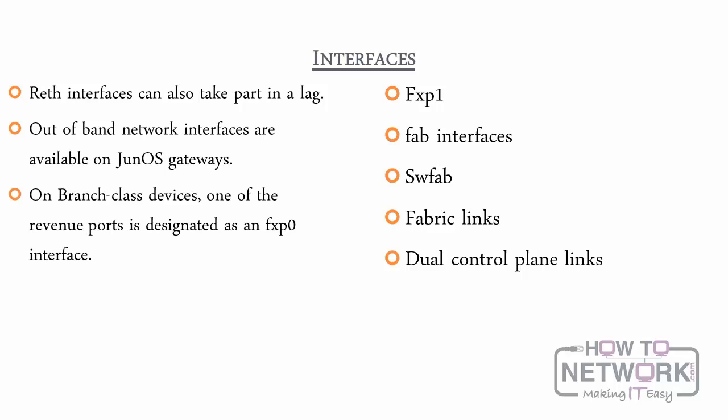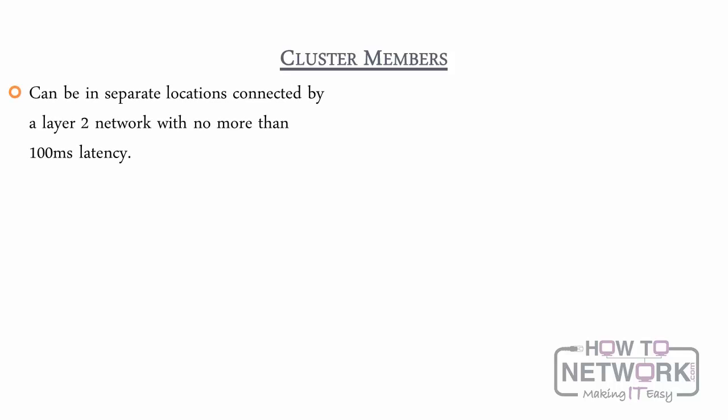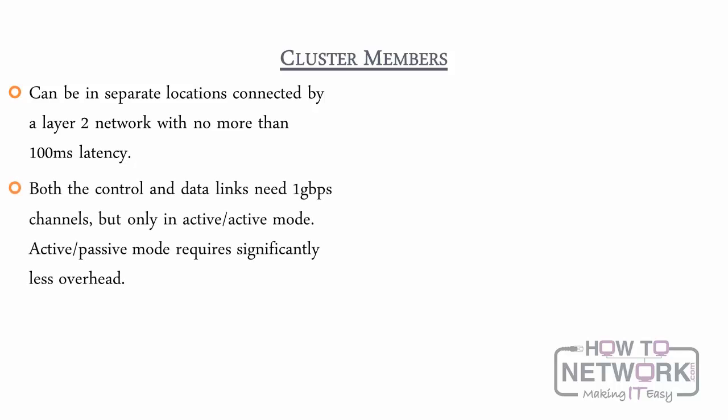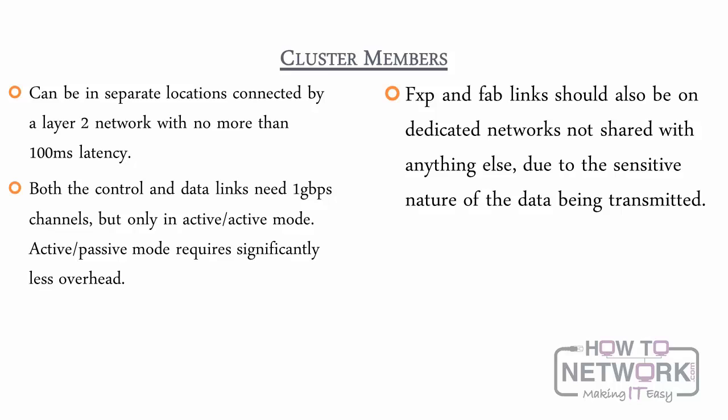Chassis cluster members needed to be connected directly to each other in the past. Now they can be in separate locations connected by a layer 2 network with no more than 100 millisecond latency. Both the control and data links need 1 gigabit channels, but only in active-active mode; active-passive mode requires significantly less overhead. FXP and FAB links should also be on dedicated networks, not shared with anything else, due to the sensitive nature of the data being transmitted. This feature is not available for SWFAB interfaces.